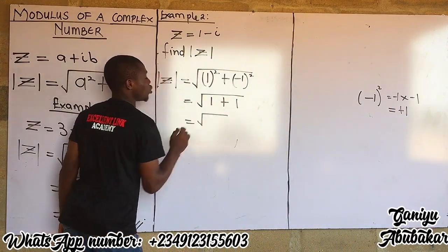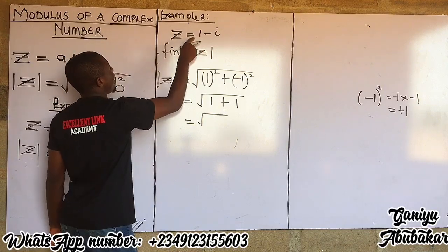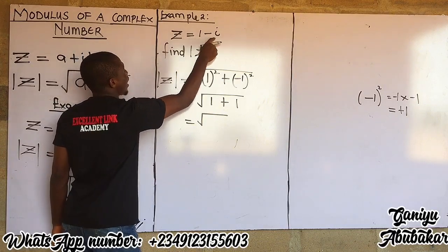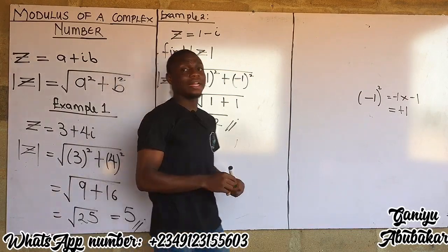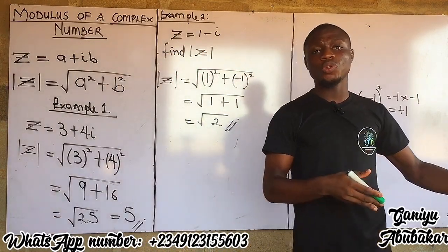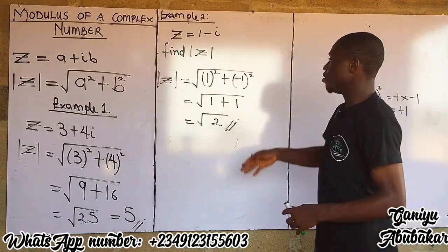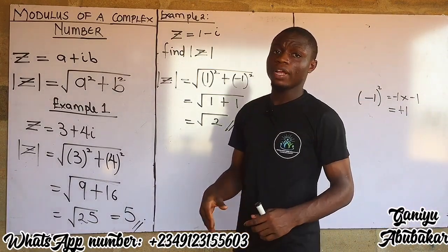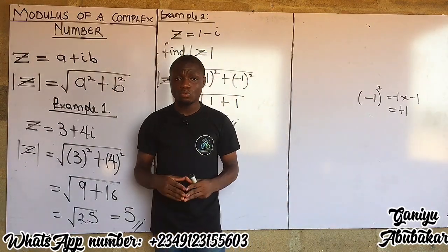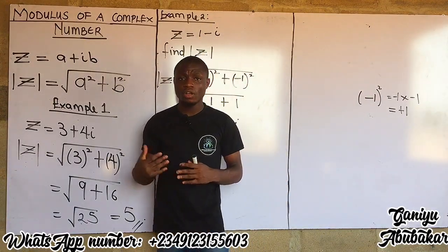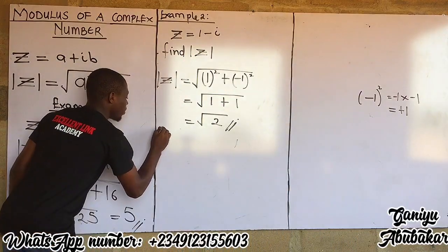So the modulus of the complex number z equal to one minus i gives root 2 as the answer. Let's take one more example to end this concept.